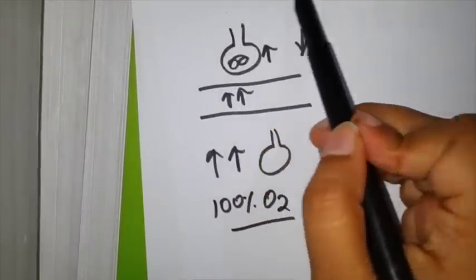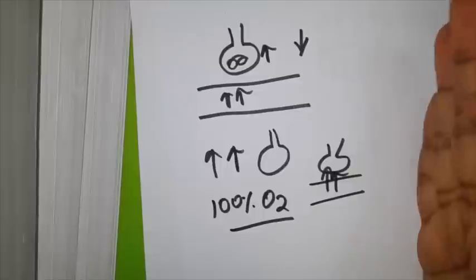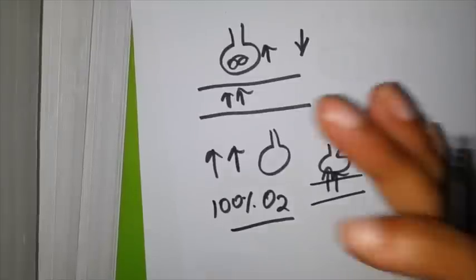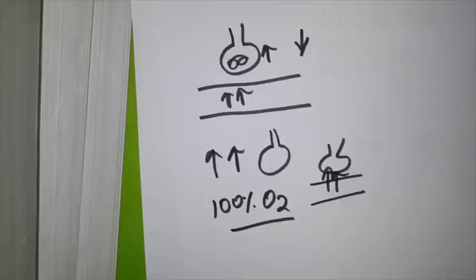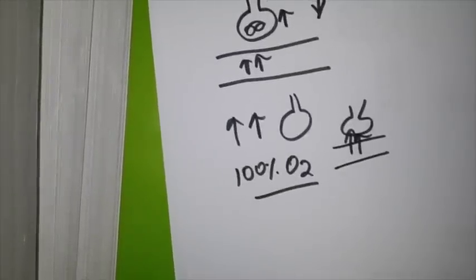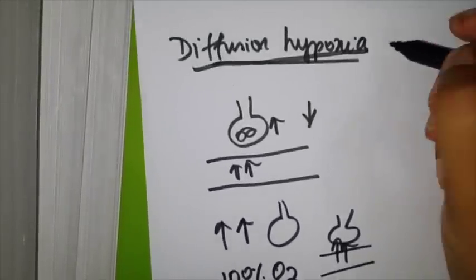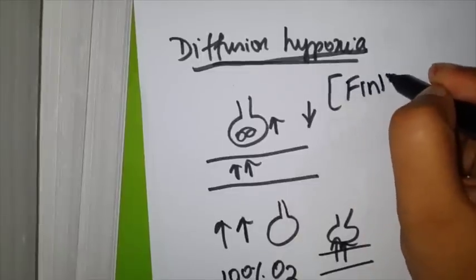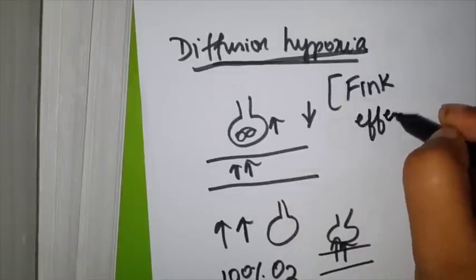Diffusion hypoxia is something that occurs when the patient is recovering from anesthesia. This is avoided by ventilating or by giving 100% oxygen to the patient. There is one thing you need to know: diffusion hypoxia is also called Fink effect.